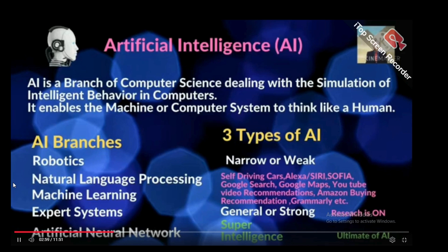The second type is General or Strong AI — research is ongoing in this area. Our current AI applications fall in the Narrow or Weak AI category, and we have not yet reached the full potential of Strong AI. The third type is Superintelligence — Artificial Superintelligence — that is the ultimate of AI.